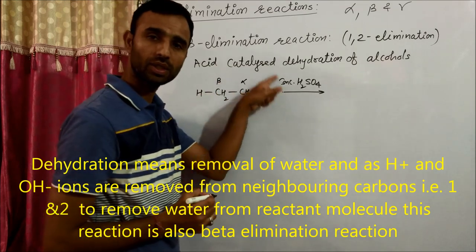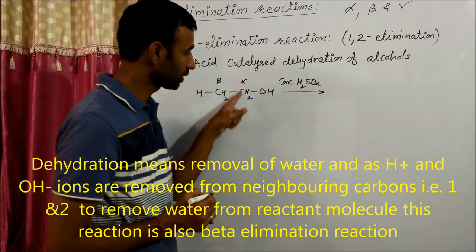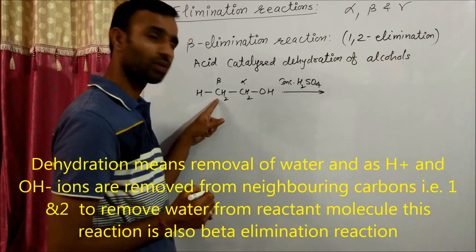The typical leaving group is OH. This carbon attached to OH is the alpha carbon. Another group is removed from beta.